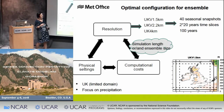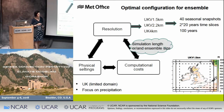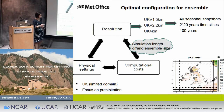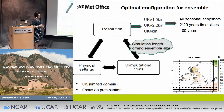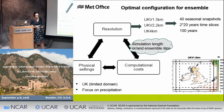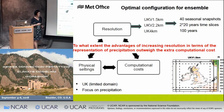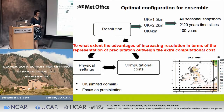To give an example of what we can afford: at 1.5 km we can afford only 40 seasonal snapshots, which might not be enough to say anything about climate change. At 2.2 km we can afford two slices of 20 years. At 4 km we can afford 100 years — always keeping at least 12 ensemble members. For us the point is to understand to what extent the advantages of increasing resolution in terms of precipitation representation outweigh the extra computational cost.